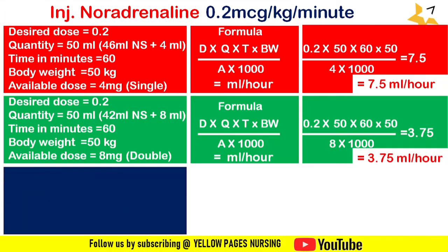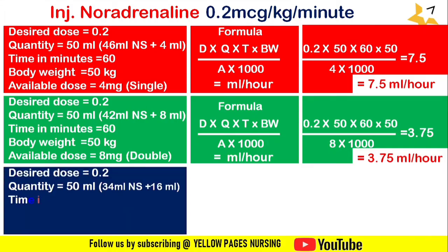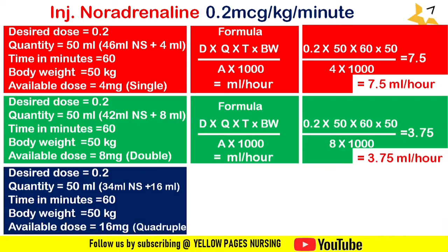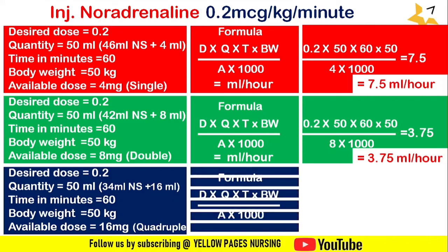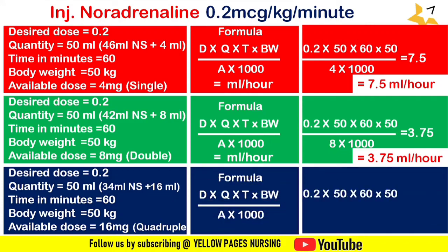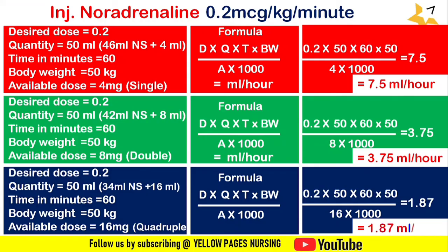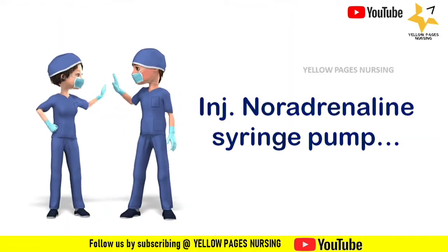For quadruple strength: desired dose = 0.2, quantity = 50 ml (34 ml normal saline + 16 ml noradrenaline), time = 60 minutes, body weight = 50 kg, available dose = 16 mg. Applying the formula gives the answer: 1.87 ml per hour. This covers drug calculation on injection noradrenaline infusion using single, double, and quadruple strength.